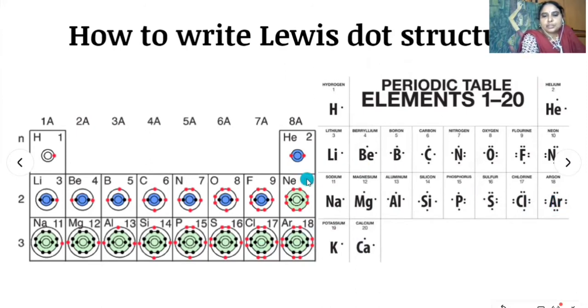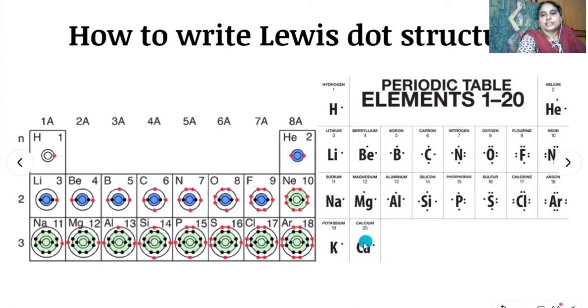Potassium contains one electron in its outermost shell, so one dot on potassium. And calcium has two valence electrons, so put two dots on calcium.